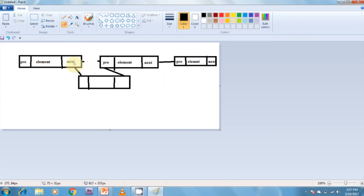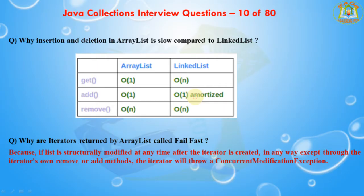The next question: Why are iterators returned by ArrayList called fail-fast? Because if the list is structurally modified at any time after the iterator is created — in any way except through the iterator's own remove() or add() methods — the iterator will throw a ConcurrentModificationException. Thus, in the face of concurrent modification, the iterator fails quickly and clearly, rather than risking arbitrary, non-deterministic behavior at an undetermined time in the future.